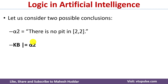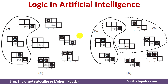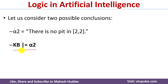For alpha 2 — no pit in (2,2) — the knowledge base is true in three models. In one model there is no pit in (2,2) (true), but in two models there is a pit in (2,2) (false). Since alpha 2 is not true in all models where the knowledge base is true, the knowledge base does not entail alpha 2, meaning alpha 2 is a false statement.